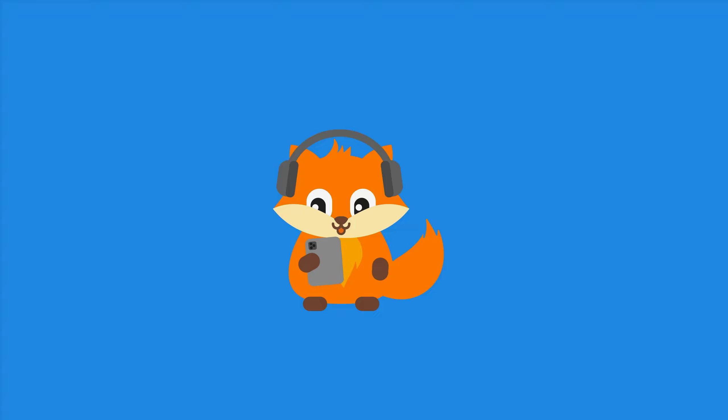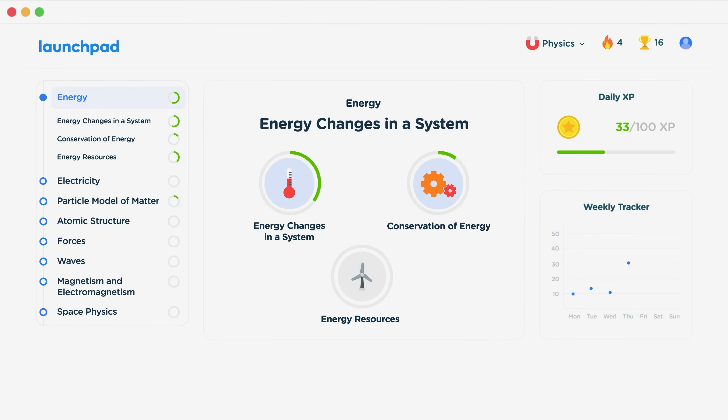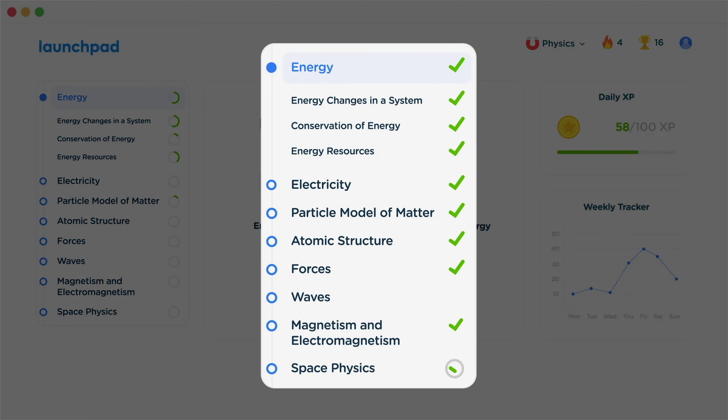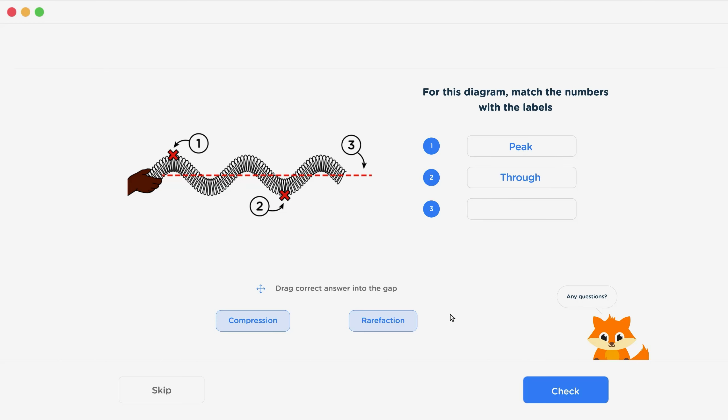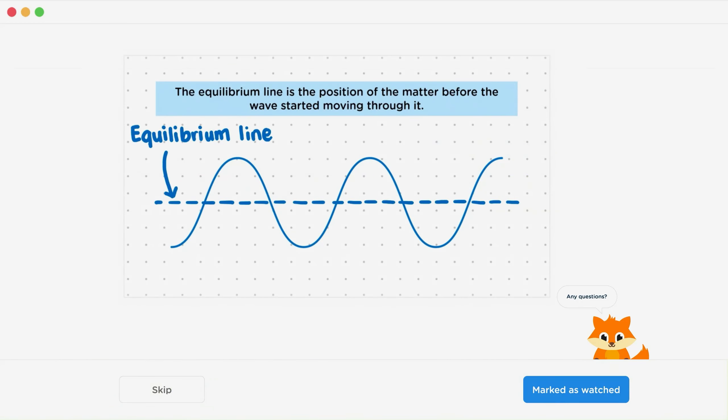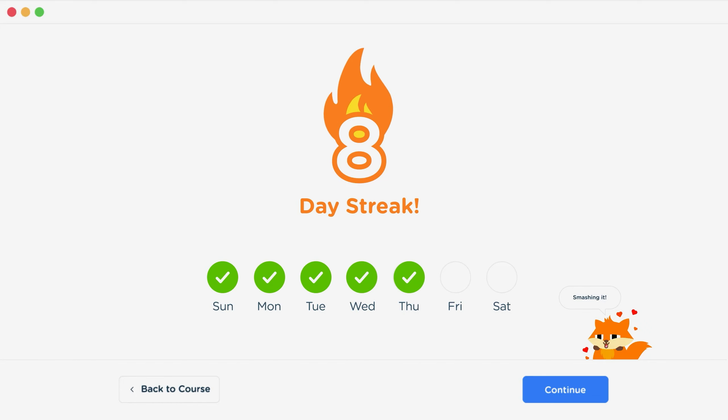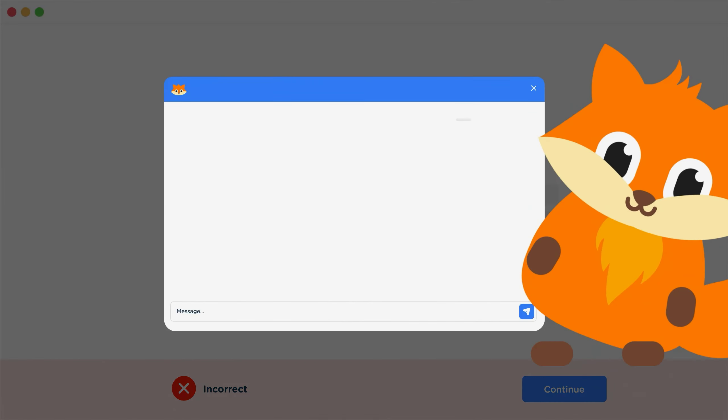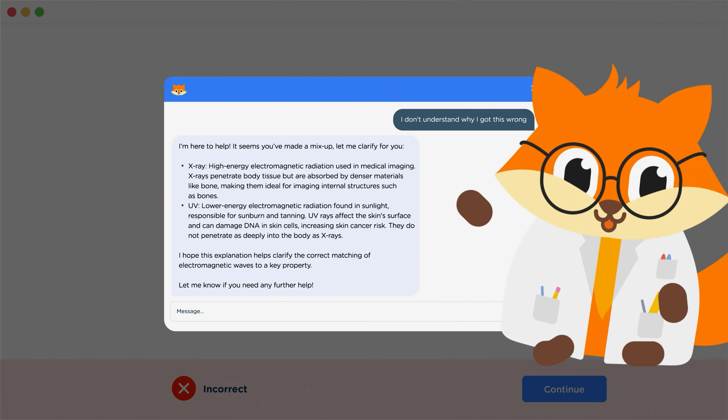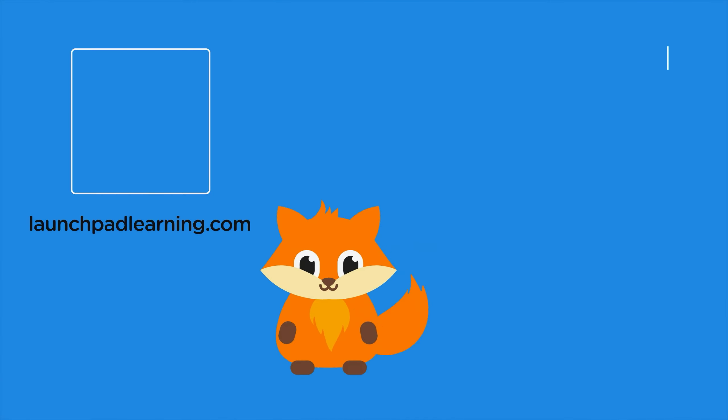Thanks for watching. If you want to take your GCSE revision to the next level, head over to launchpadlearning.com and check out our smart learning platform that's been designed to get you top results in your exams. We cover your whole specification and make revision fun with interactive quizzes, easy to follow videos and more. You'll be kept motivated by your own AI tutor who's here to support you every step of the way. To check it out for yourself, click here. Or click here to keep watching a selection of the videos from our full GCSE physics course. See you there!